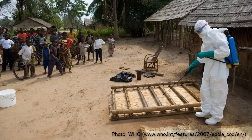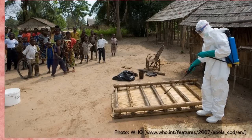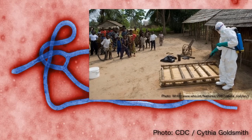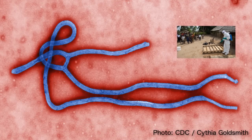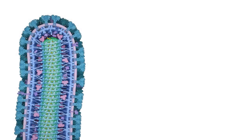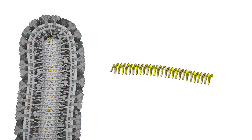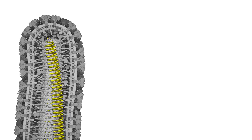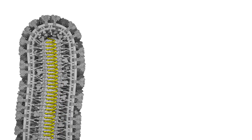Ebola virus is a deadly puzzle, yet it is a puzzle with remarkably few pieces. To see these pieces, we need to zoom in beyond what this electron micrograph can show us and view the virus on the molecular level. Ebola virus RNA contains only seven genes, each producing a protein the virus needs to survive and replicate itself.